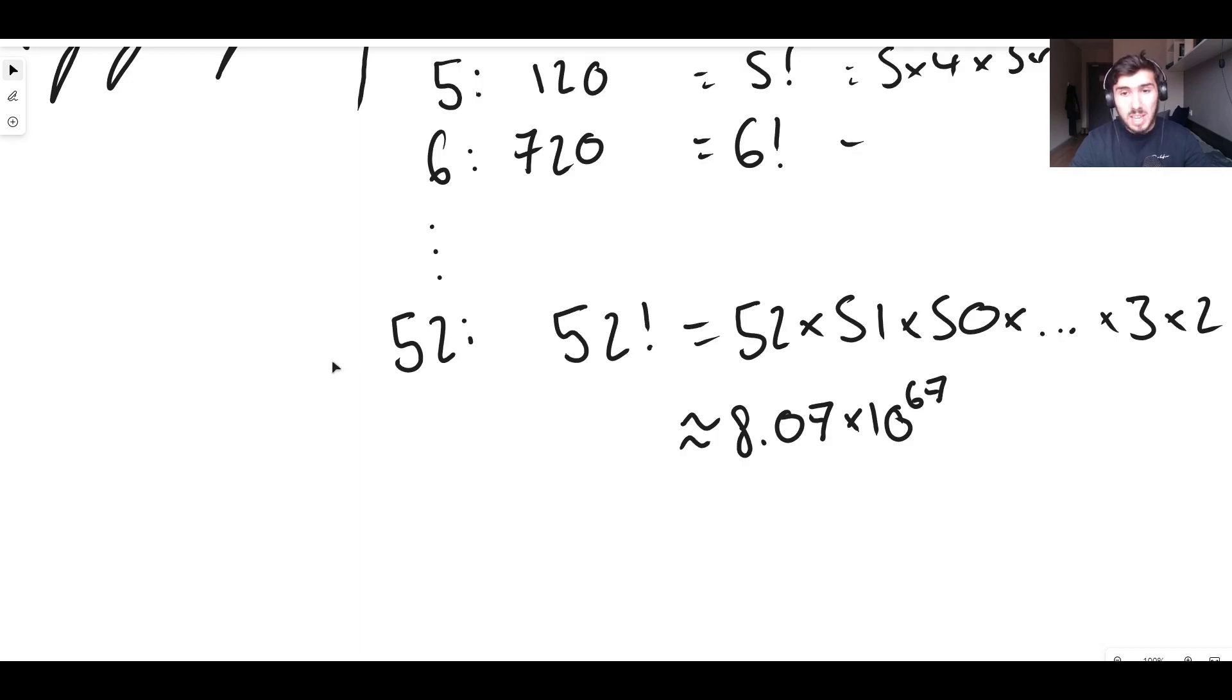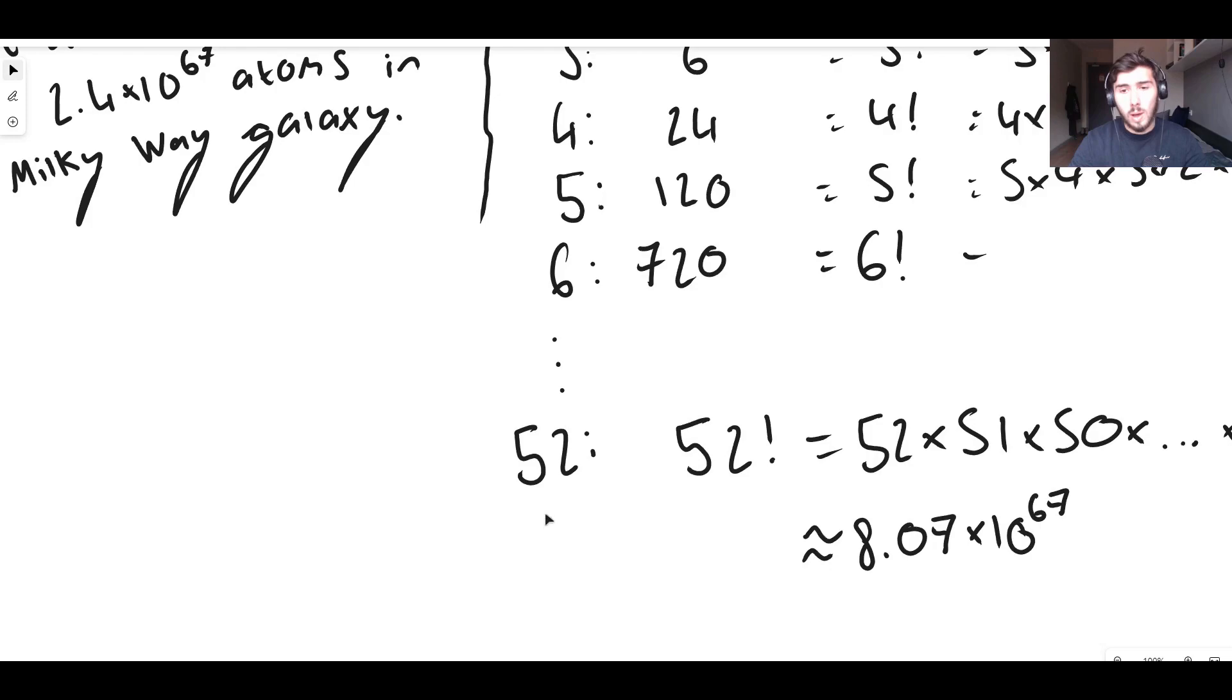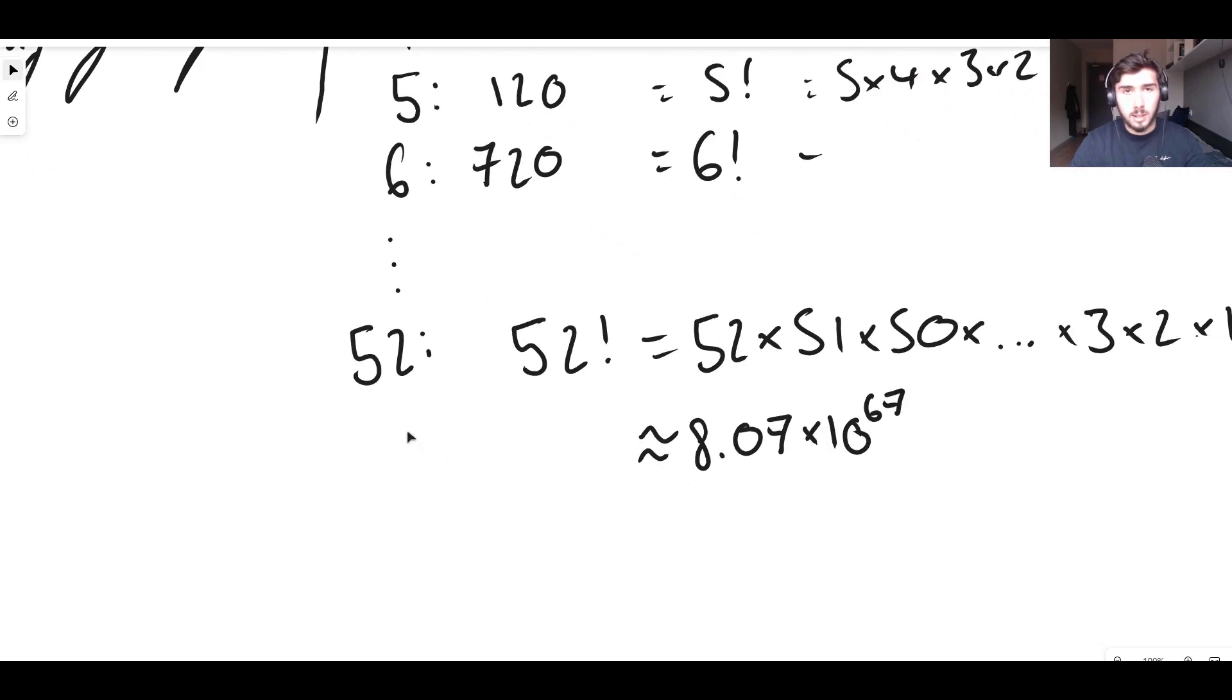In fact it's actually not even similar. I mean it's about three times as much. There are about three times as many ways to shuffle a normal deck of playing cards than there are atoms in the Milky Way galaxy. Of course this number that I'm using for the Milky Way galaxy is totally an estimation. We don't actually know how many atoms are in the Milky Way but this is an estimation.